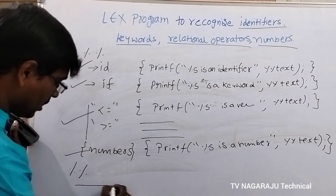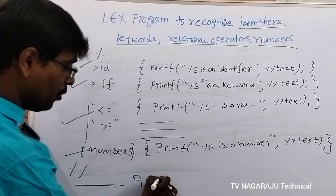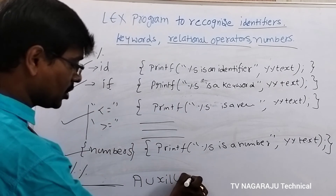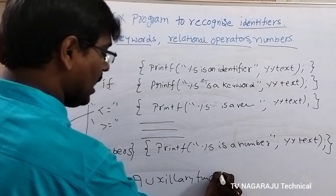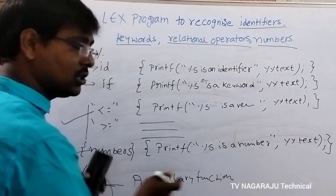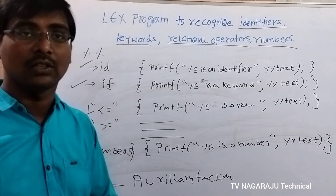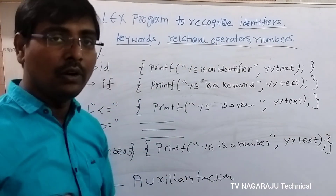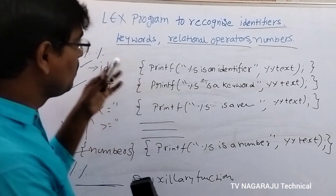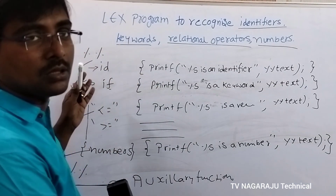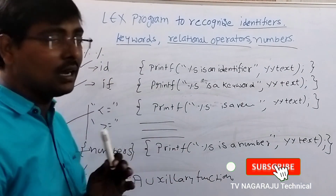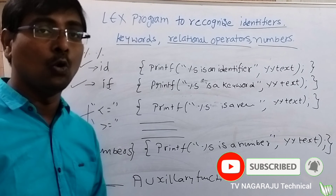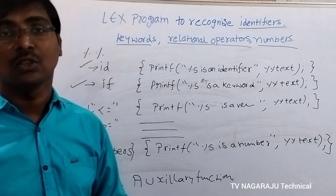After completion of the transition rules, if you have any auxiliary functions you can write them down here. For this example we don't have any auxiliary functions, so we simply close this section. This is the way to recognize different types of tokens by using the Lex tool.